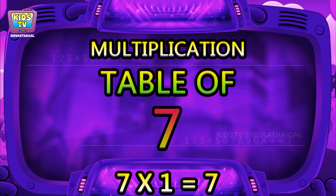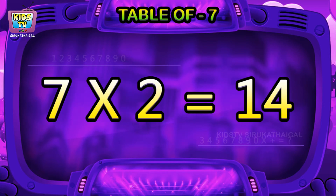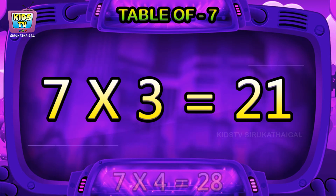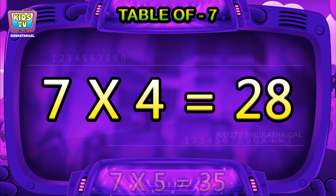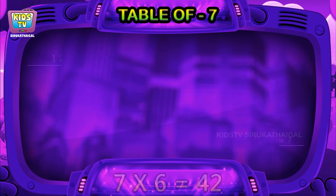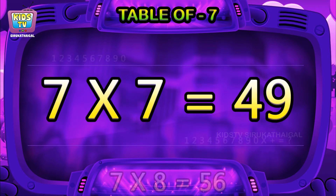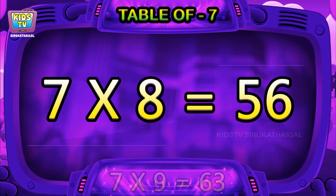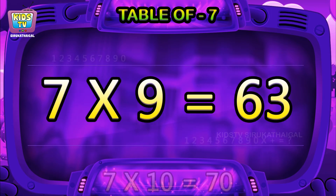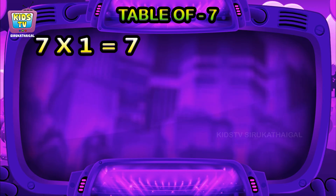Hi friends, now we will learn table of seven. Seven ones are seven, seven twos are fourteen, seven threes are twenty-one, seven fours are twenty-eight, seven fives are thirty-five, seven sixes are forty-two, seven sevens are forty-nine, seven eights are fifty-six, seven nines are sixty-three, seven tens are seventy.